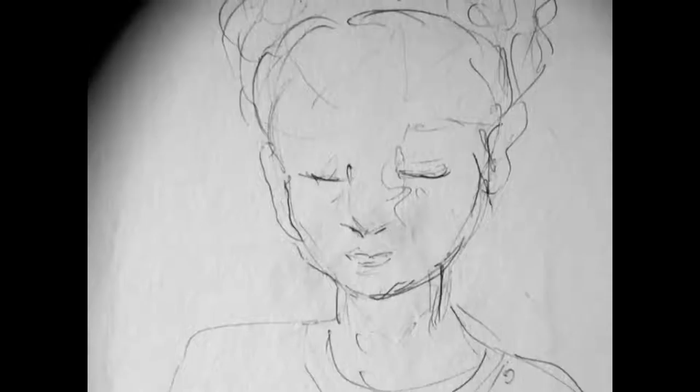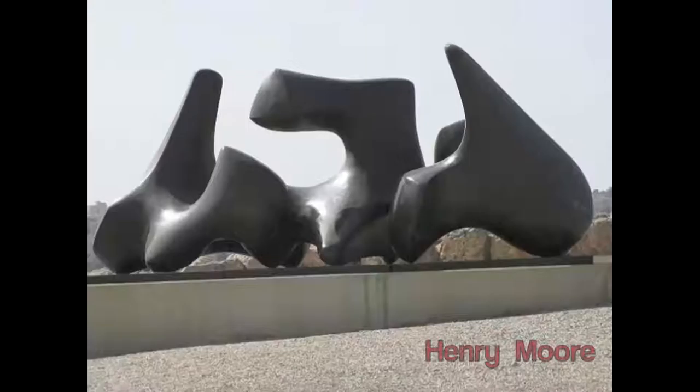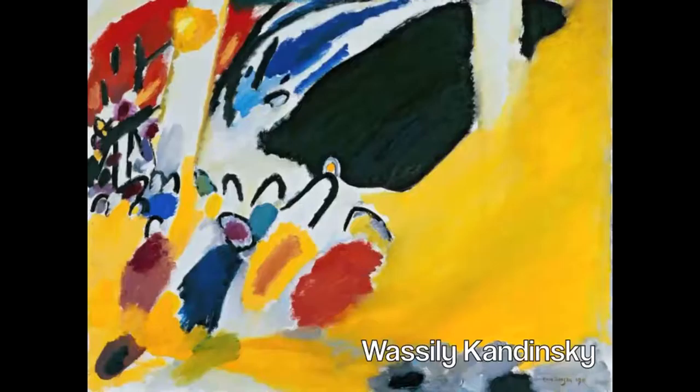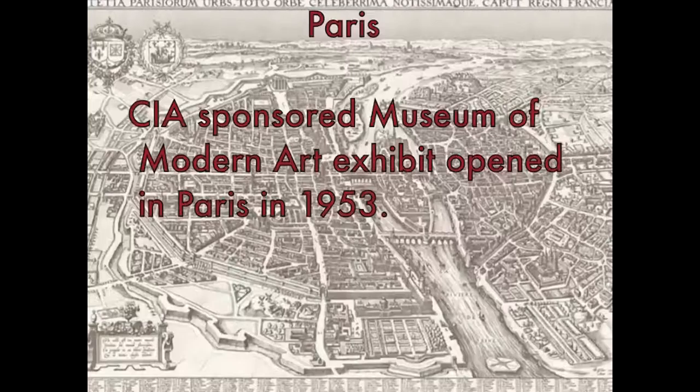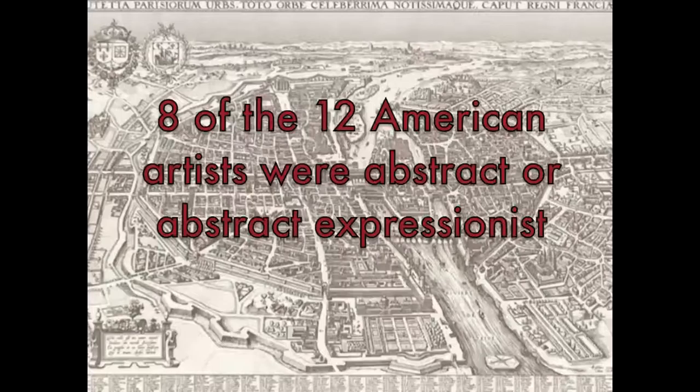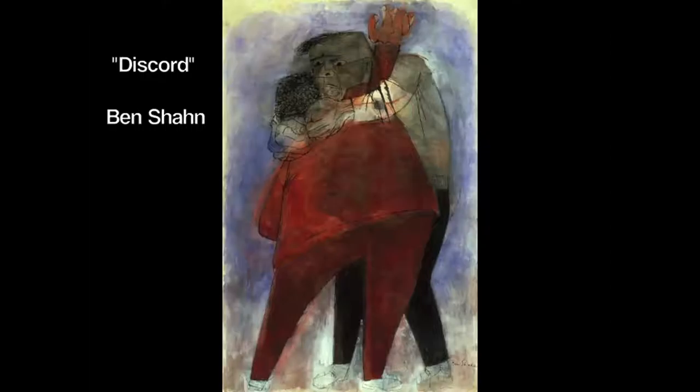The anti-communist atmosphere also influenced why abstract art was favored for exhibits by museums across the country. As an example, in 1953, eight of the twelve American artists of a CIA-sponsored Museum of Modern Art exhibit, which opened in Paris, were abstract or abstract expressionist. The lone social protest artist, the popular Ben Shahn, was investigated the same year for his political beliefs.